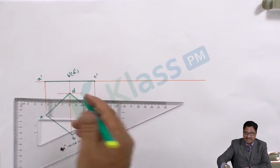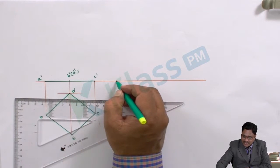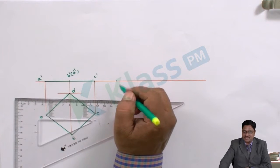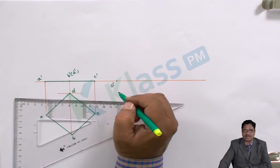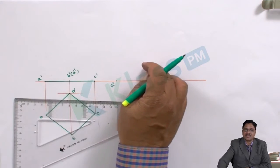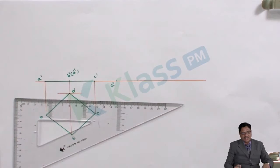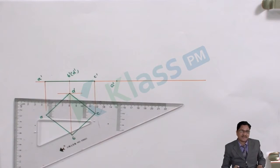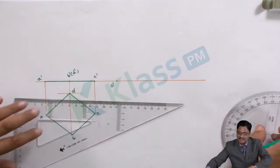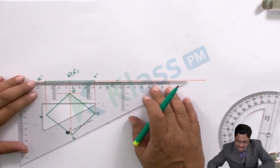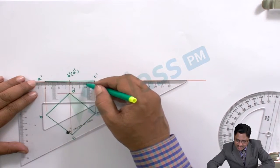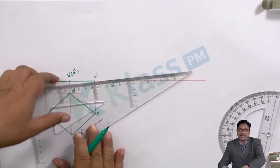In the next stage, diagonal AC will be tilted. Corner A is to be located on the XY line since it is resting in HP with no above distance. The inclination of diagonal AC is given as 30 degrees with HP, so draw a 30-degree reference line using the protractor. First measure the length of the diagonal — it measures 72mm.